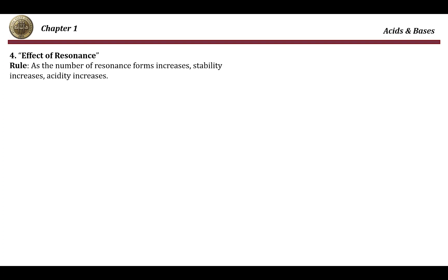Finally, we will discuss the effect of resonance, which is one of the most important factors affecting stability and acidity. As the number of resonance forms increases, stability and acidity increase. Upon resonance, the negative charge is distributed over more than one element — the electron density is spread over a larger surface area — which increases stability. For example, let's compare a carboxylic acid and an alcohol.